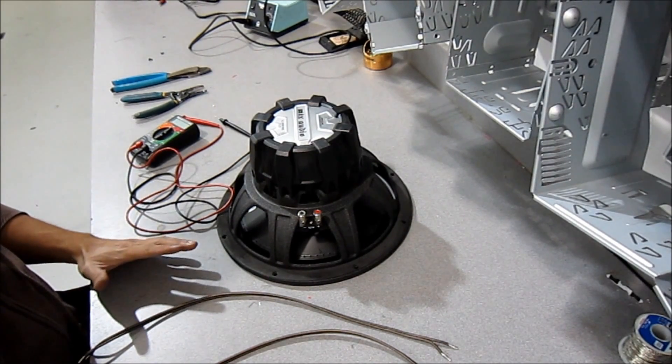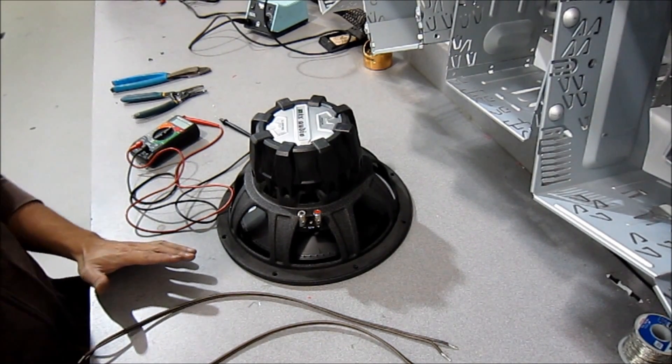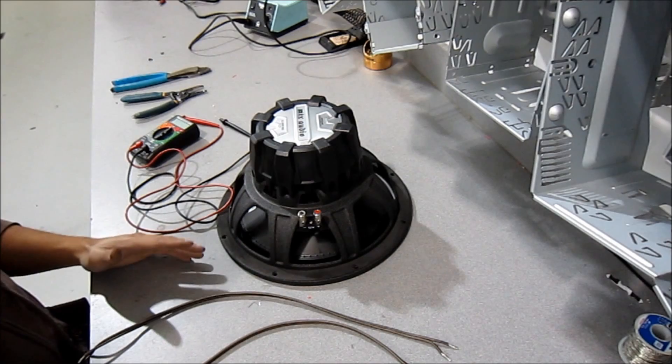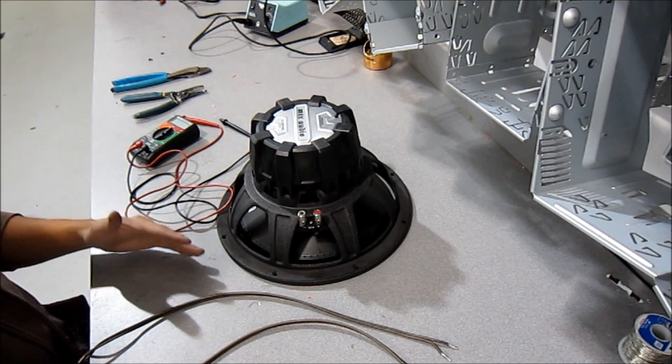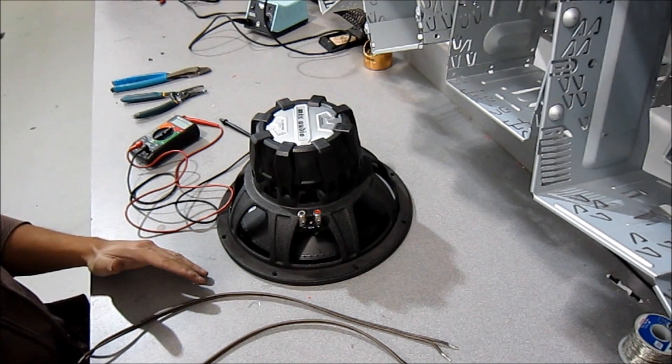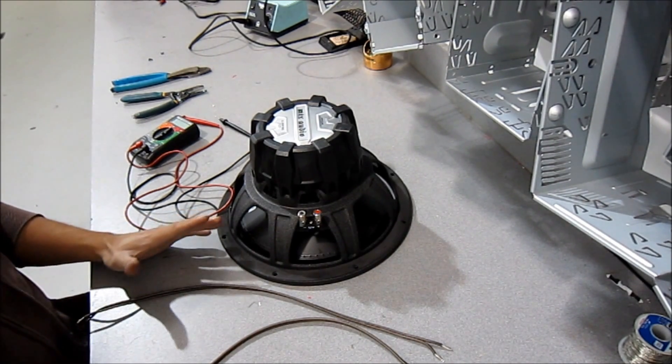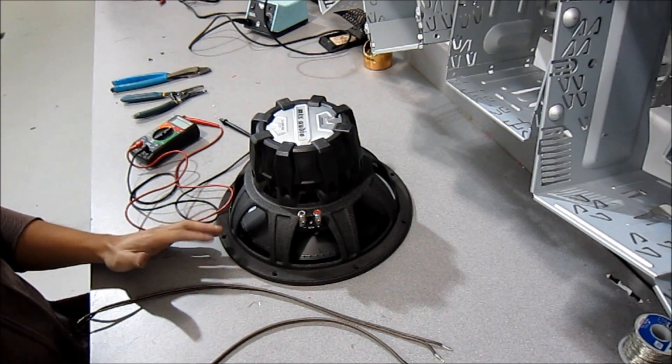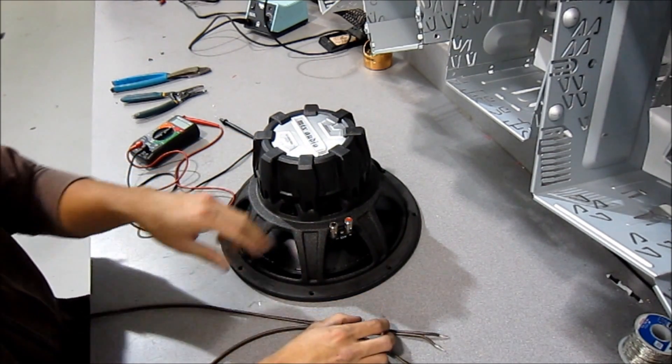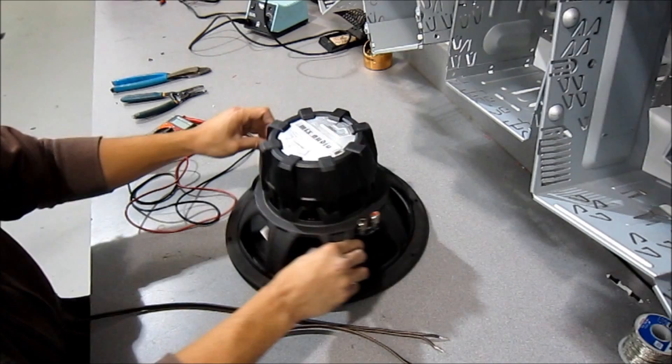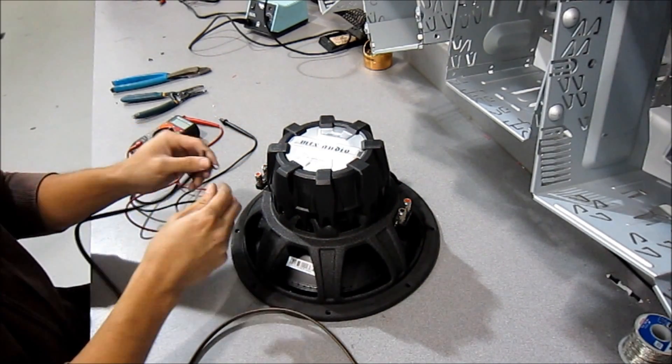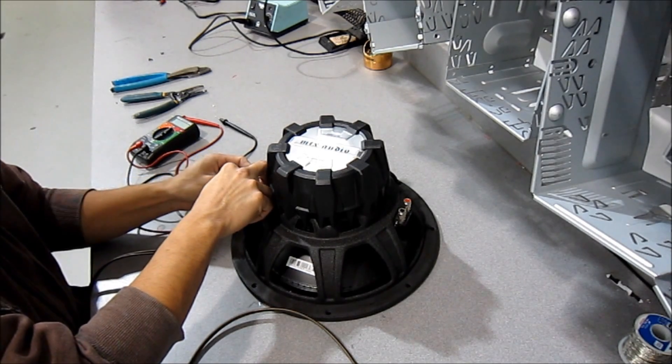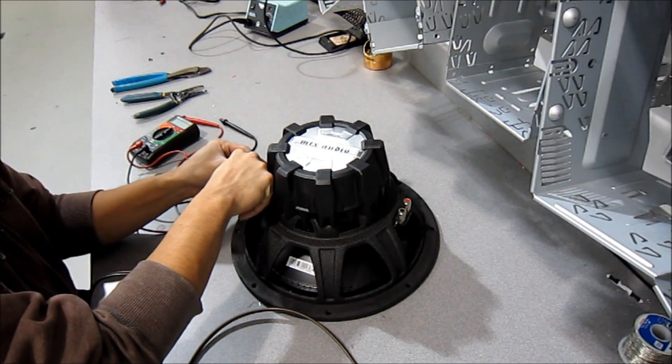So to start off with, we're going to start doing this with a 2 ohm load. Now in this scenario, you have a monoblock amplifier that only has one speaker input, so you can't bridge it. So what you have to do is you have to lower the impedance at the subwoofer itself to maximize the amount of power you want to get out of this amplifier. So you're going to run these speaker terminals in parallel. So what I mean by parallel is you're going to hook up the positive to positive and the negative to negative.